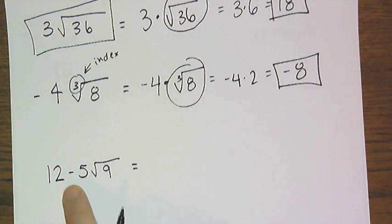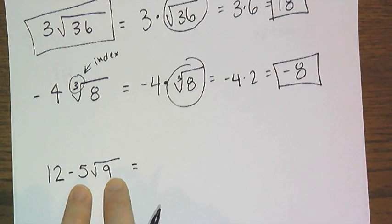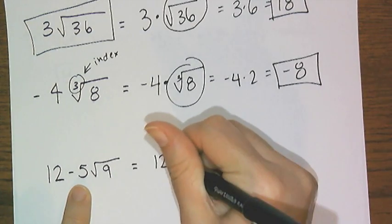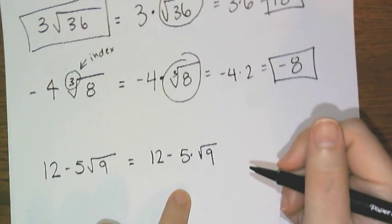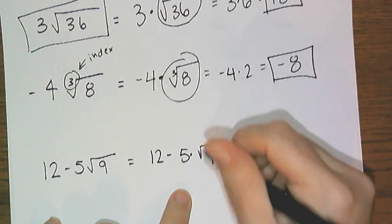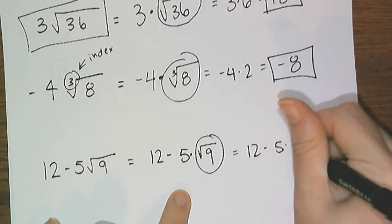So what about this last one? 12 minus 5 root 9. Remember that in between the 5 and the radical is a multiplication. This is really 12 minus 5 times the square root of 9. And then, following the order of operations, exponents comes first, so I have to deal with the square root of 9. So I get 12 minus 5 times 3.